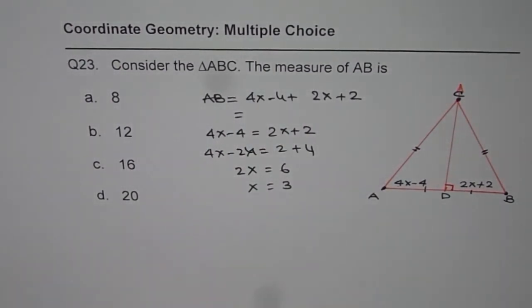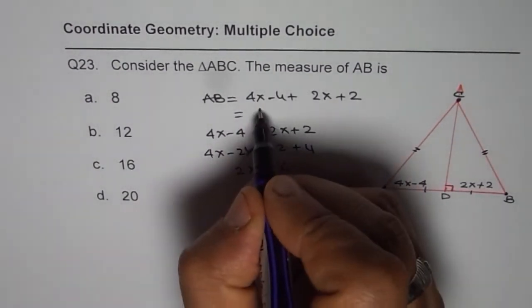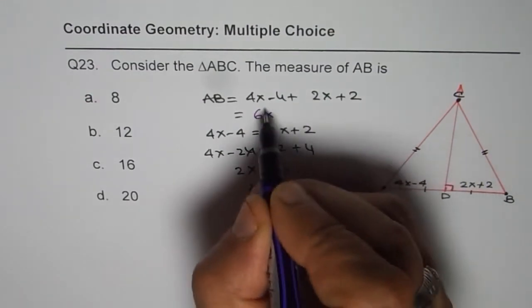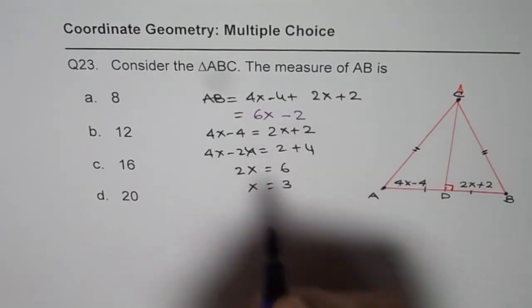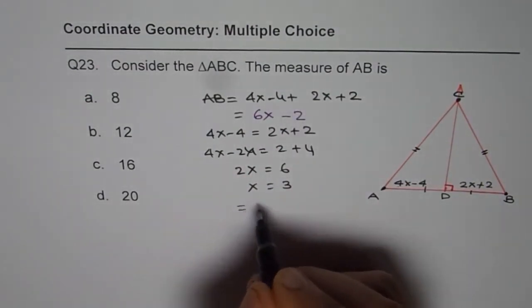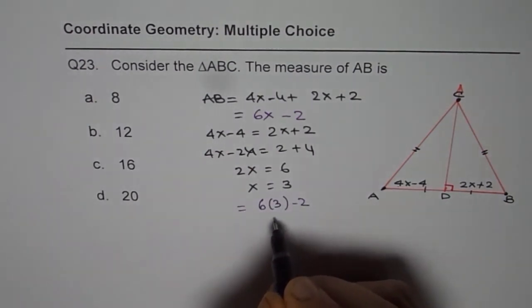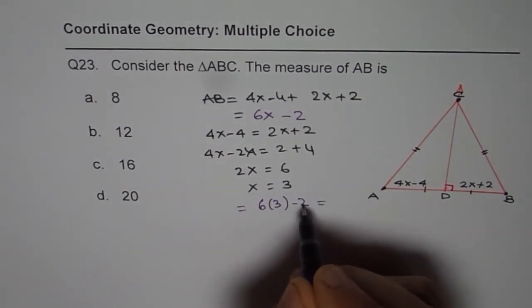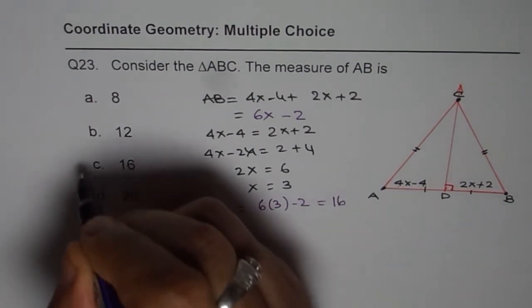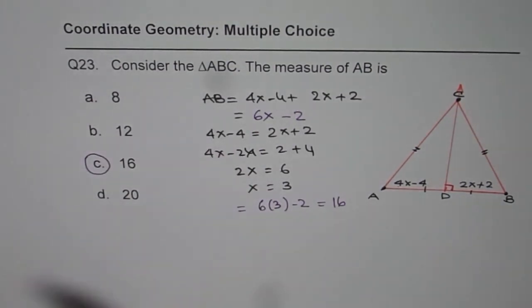In our case, 4x plus 2x is actually 6x, and minus 4 plus 2 is minus 2. So we will substitute x as 3 here, so it becomes 6 times 3 minus 2, which is 18 minus 2, which is 16. So the right answer is C. That is how we are going to get it. Thank you.